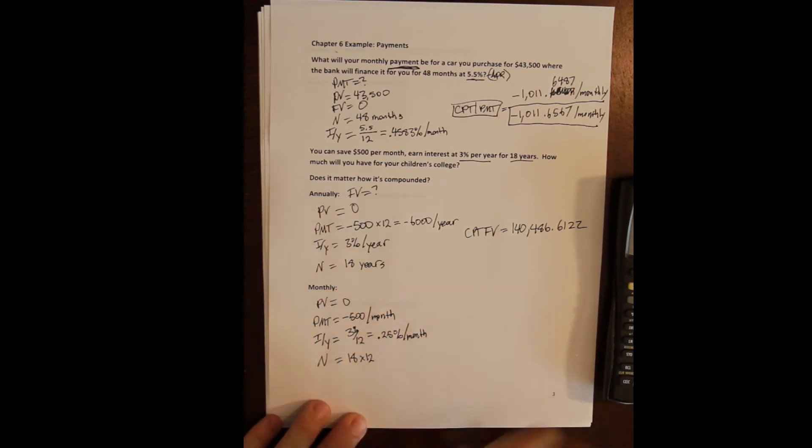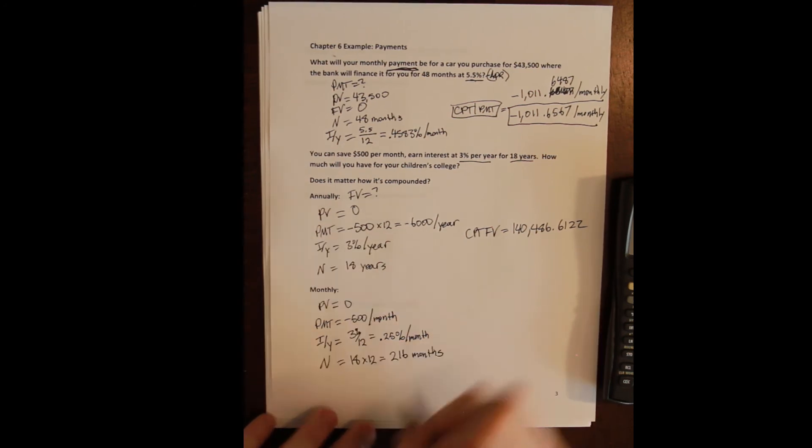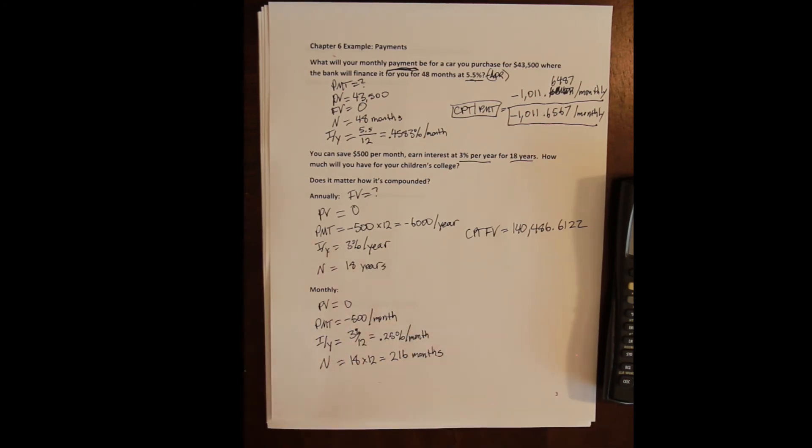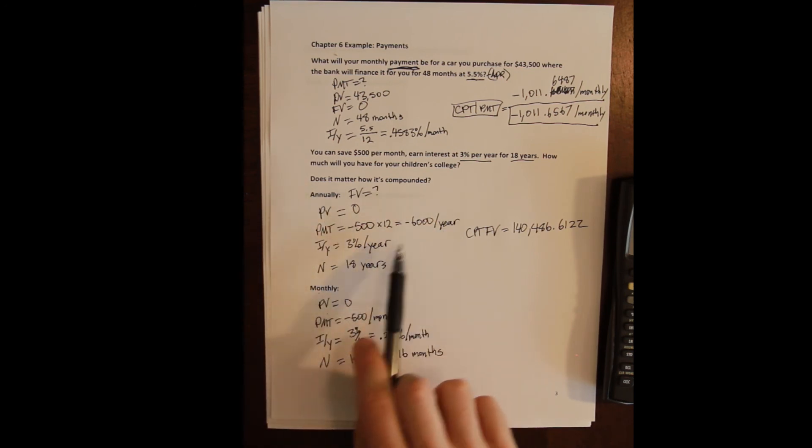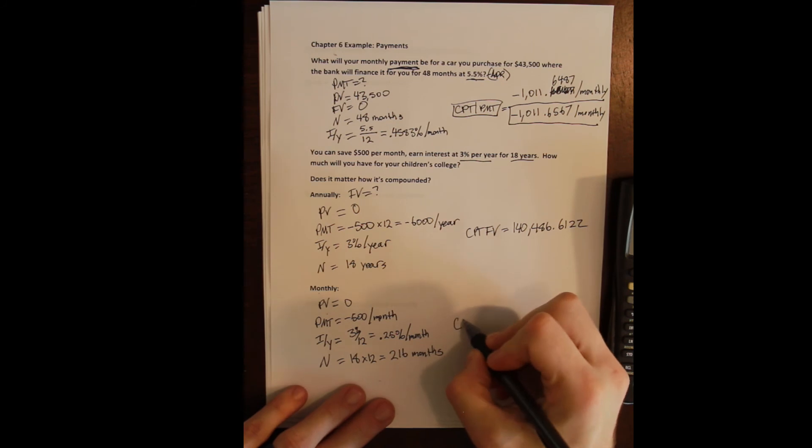And we have an N here—instead of eighteen years, I am going to have eighteen years times twelve months per year, or 216 months. Again, the way I'm checking whether I've got everything in a row is that all of my compounding periods agree with the compounding period that I need to solve for. So I've got months, months, months, months, months. I had years, years, years, years, years.